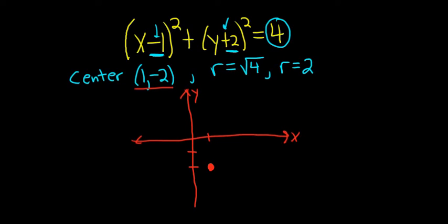Now from the center we're going to travel a distance of 2 because that's the radius. The easiest way to do this is to just go up 2, put a dot, down 2, put a dot, right 2, put a dot, and then left 2, put a dot.